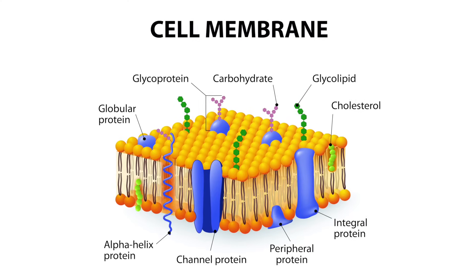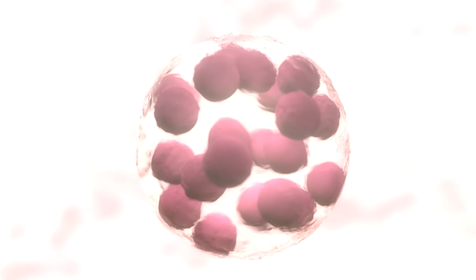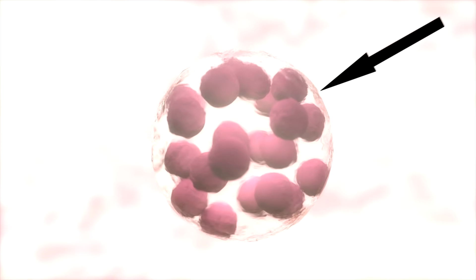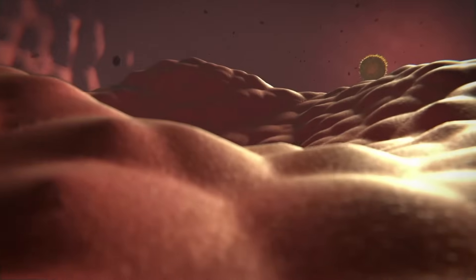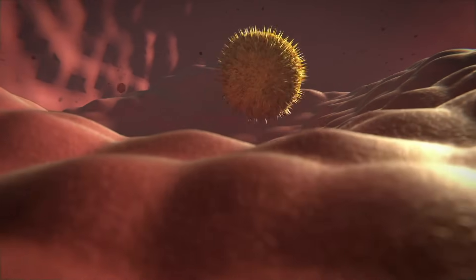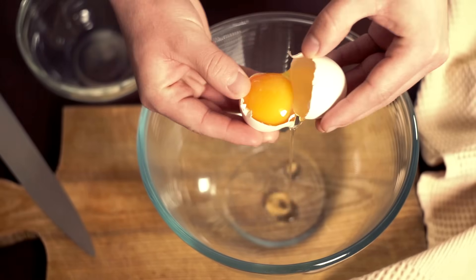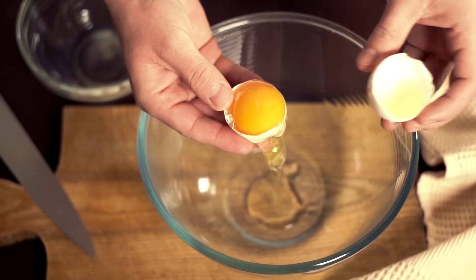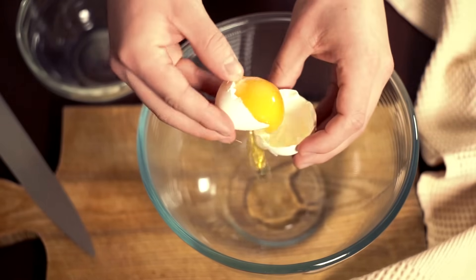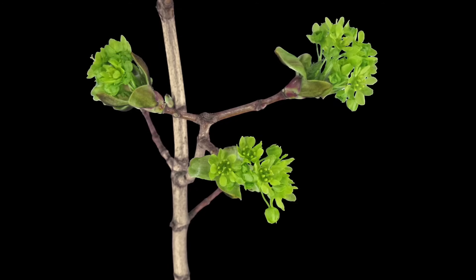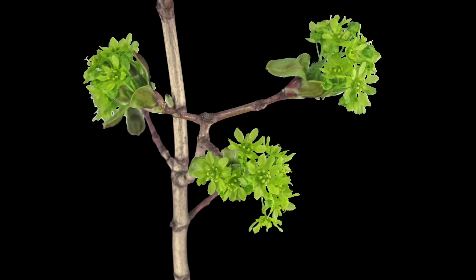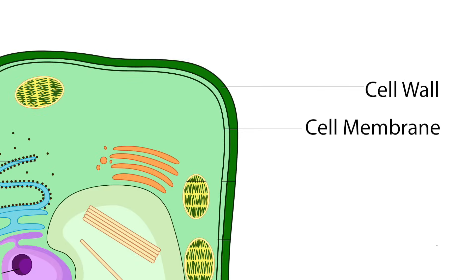Cytoplasm gives cells their shape and holds everything in place. The cell membrane is made up of fats and proteins — it is the wall around the cell. It keeps important things inside, like nutrients, and unwanted things out, like waste. Here's a cool fact: did you know that each time you break open an egg, you see a large cell?